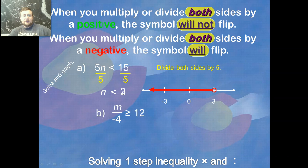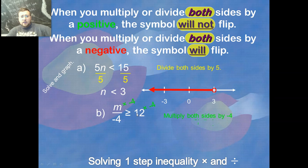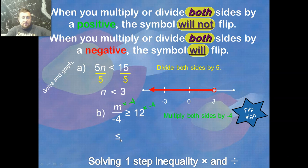On the number line, three would not be included because we don't have an equal sign, so you put an open dot and go to the left, because we're looking for numbers smaller than three. The next example: m divided by negative four is greater than or equal to 12. To get rid of the negative four, I multiply both sides by negative four, and the negative four cancels out on the left.